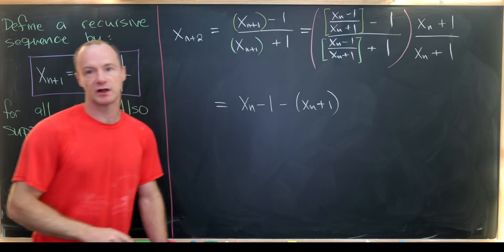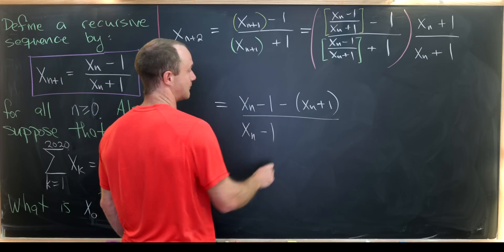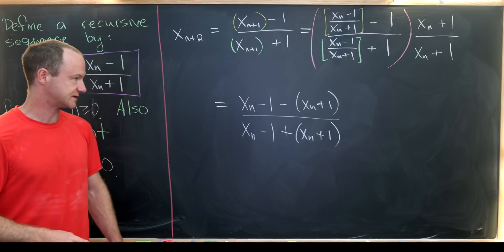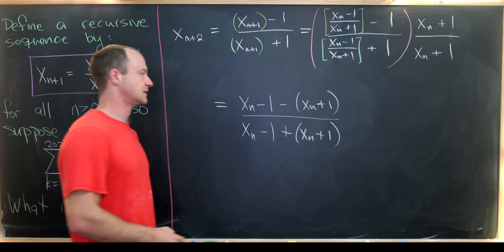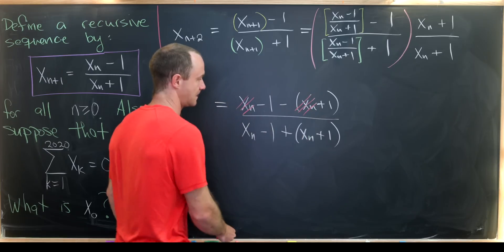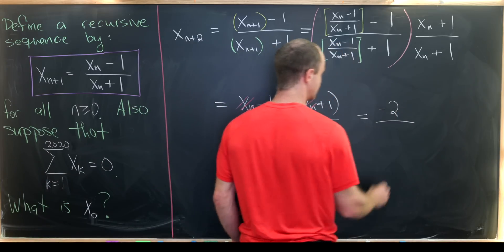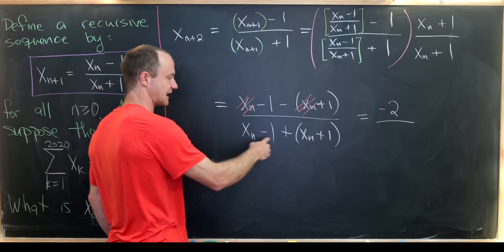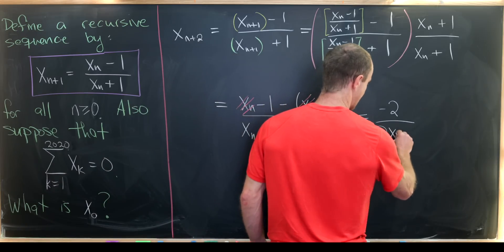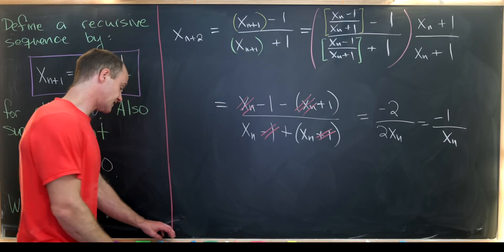From here we simplify the complex fraction by multiplying by x_n plus 1 over x_n plus 1. In the numerator we get x_n minus x_n, which gives negative 2. In the denominator we get x_n plus x_n, which gives 2x_n. In the end we have x_{n+2} equals minus 1 over x_n — a two-step recursion, though not quite linear yet.